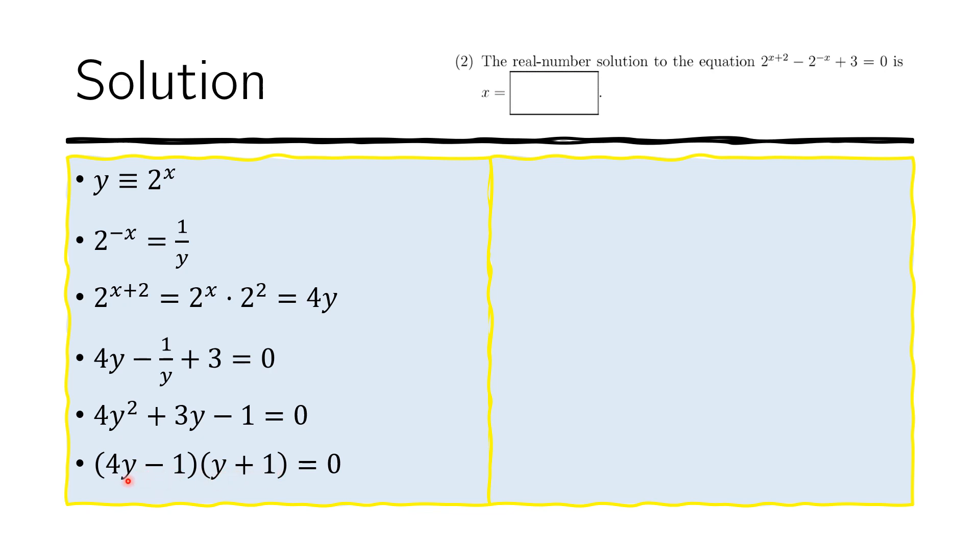These factors can be set to 0. So the solution to this equation is either 4y - 1 = 0 or y + 1 = 0, or both.